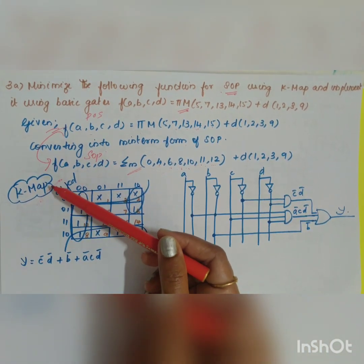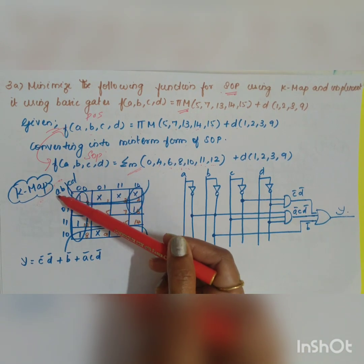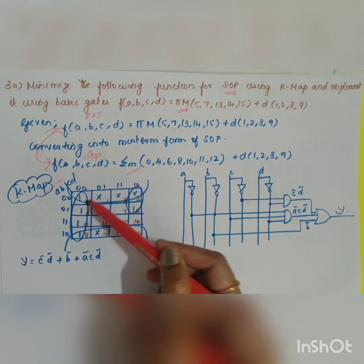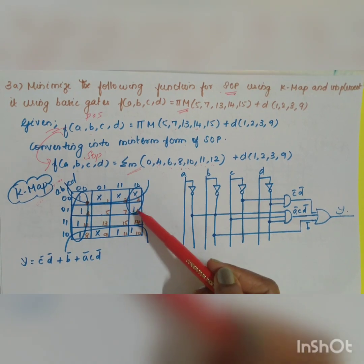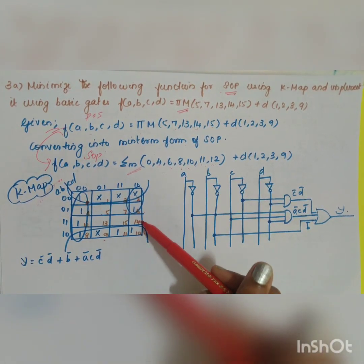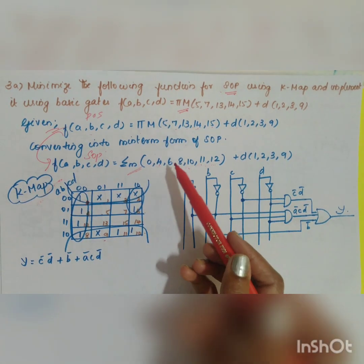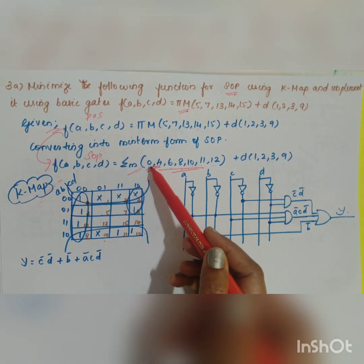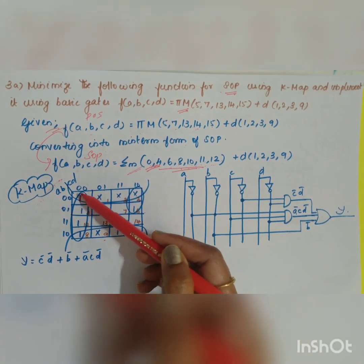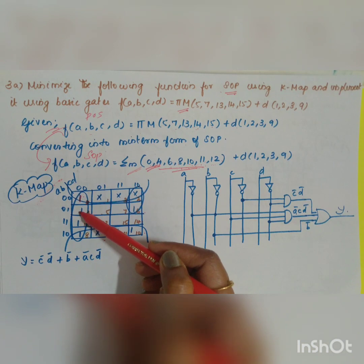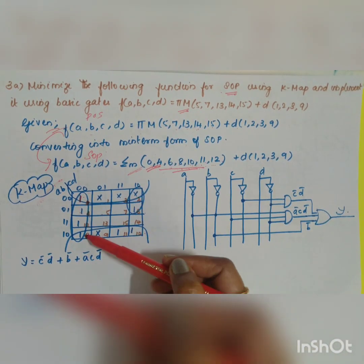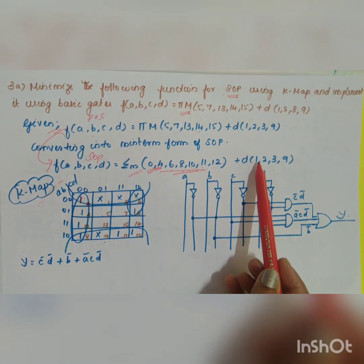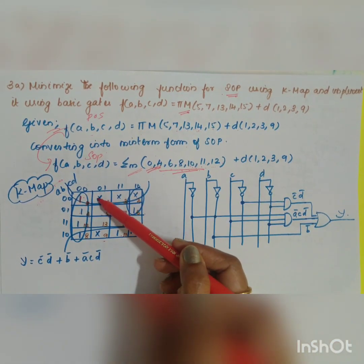Now for the K-map, the parameters are a, b, c, d. The K-map is indexed 0 through 15. Wherever you have the min term numbers — 0, 4, 6, 8, 10, 11, 12 — those cells will have value 1, since they are min terms. The don't care positions 1, 2, 3, and 9 are marked accordingly.